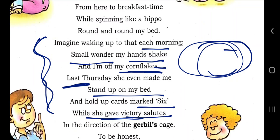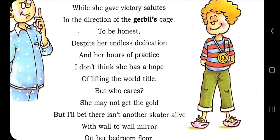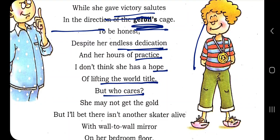Nobody is there to witness her victory, so she is asking her brother to stand and hold cards while she gives a victory salute — she is the winner in her imagination. She gives the salute in the direction of the gerbil's cage, imagining the gerbil as the audience. To be honest, despite her endless dedication and hours of practice, the brother doesn't think she has a hope of lifting the world title.